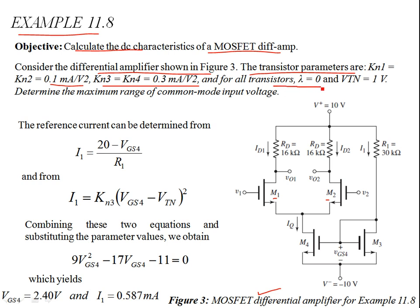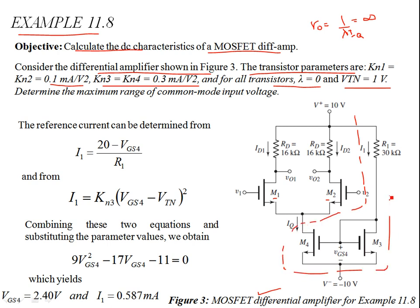Since lambda equals zero, the small signal output resistance (1/lambda × ID) is infinite, so we don't need to consider it. The output resistance of all MOSFET devices M1, M2, M3, M4 is infinite. M1 and M2 are matched, as are M3 and M4. The M3/M4 portion of the circuit forms the current source that biases M1 and M2, ensuring they operate in the active (saturation) region. IQ is the saturation current for M4 and M3, forming a current mirror configuration.